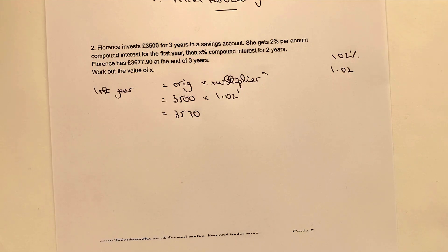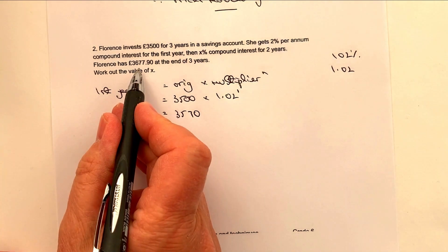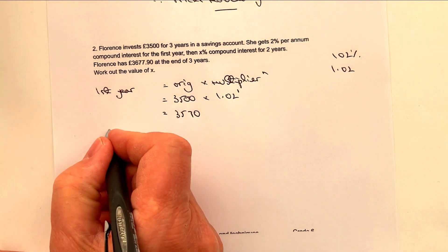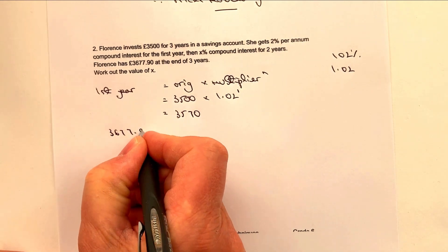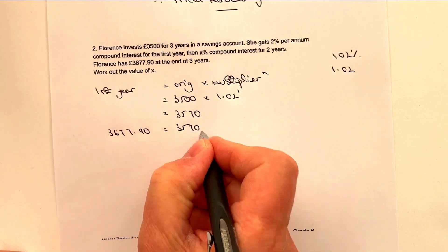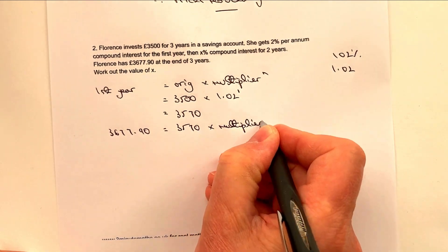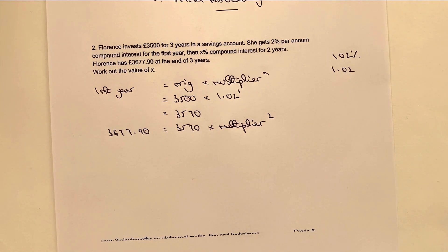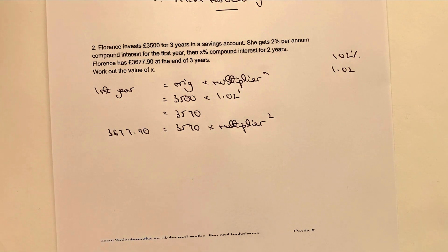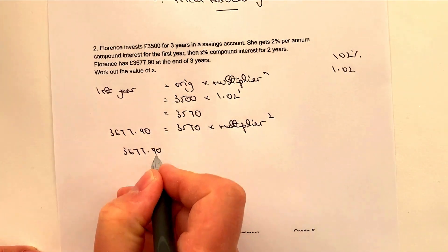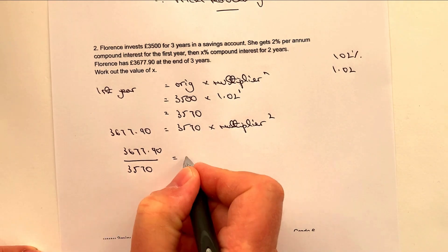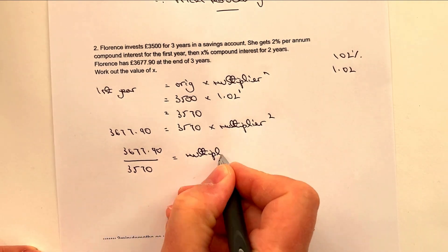At the end of the first year she's got £3,570. Now applying the same formula: at the end of the next two years she's got £3,677. That's made up of the original amount £3,570 multiplied by the multiplier — which is what we need to work out — to the power of 2 because it's 2 years. All we need to do is manipulate this to find the multiplier. I'm going to divide both sides by £3,570, giving us £3,677.90 divided by £3,570 equals the multiplier squared.